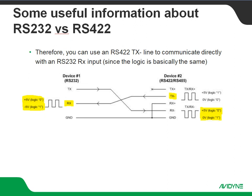You can actually use an RS422 transmit negative line to communicate directly with an RS232 receive input because the logic is basically the same. The difference is zero volts versus negative 5 volts, but they're both going to be construed as less than one and a half volts positive. The big thing to keep in mind: the shielding for these wires is very important, because a volt and a half is all you need for electrical noise to cause problems. So keep that in mind as we press on to the actual GTX 345 interface.